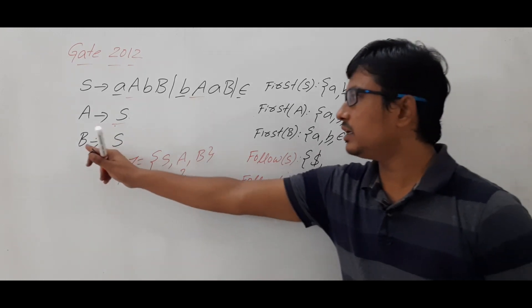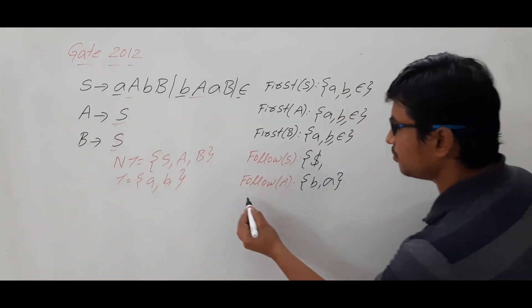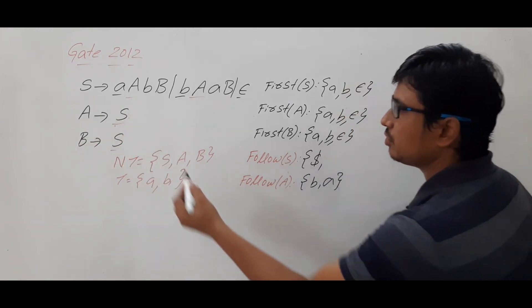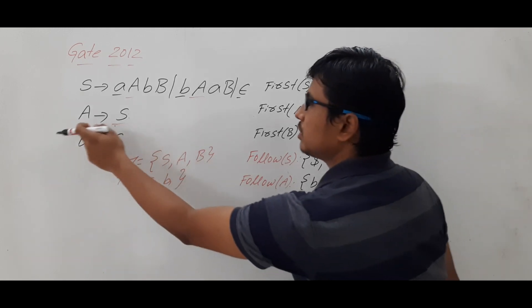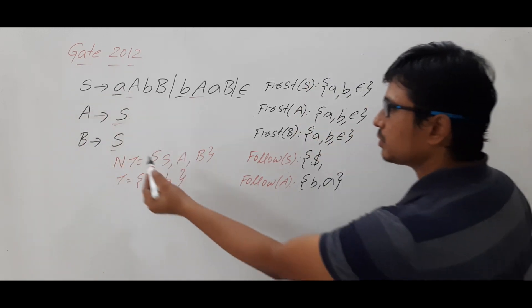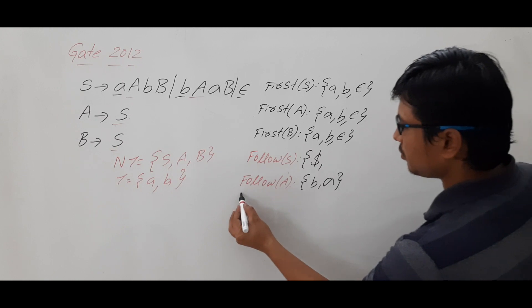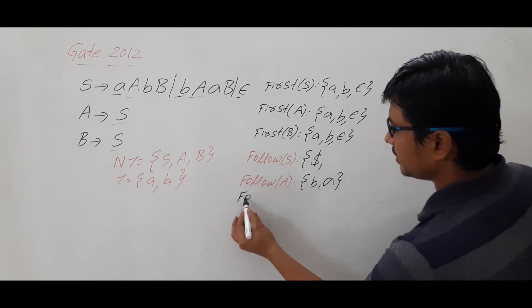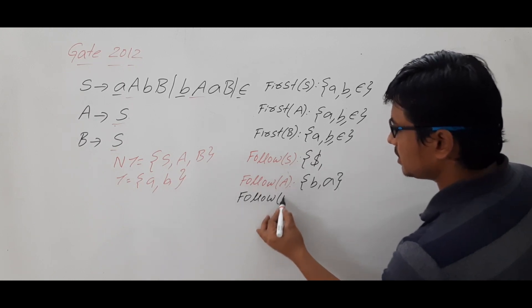So FOLLOW of A is {a, b}. Similarly, let me compute FOLLOW of B, because FOLLOW of S is equal to FOLLOW of A, and FOLLOW of S also relates to FOLLOW of B.